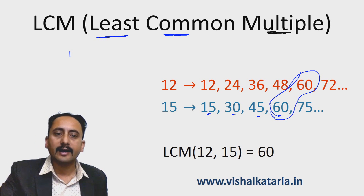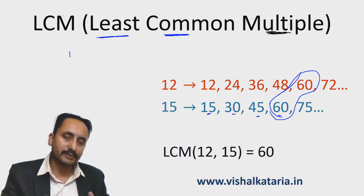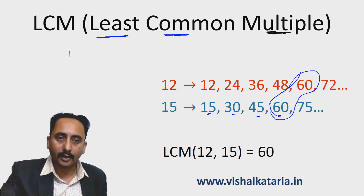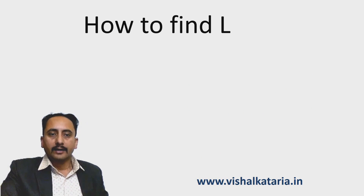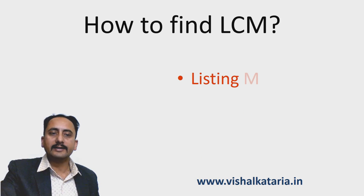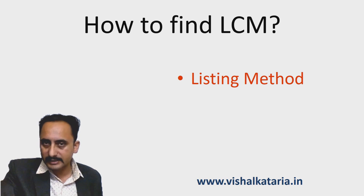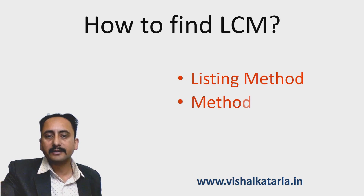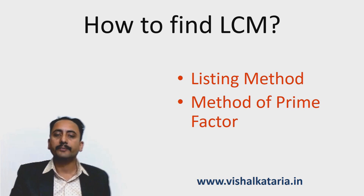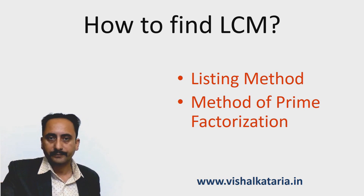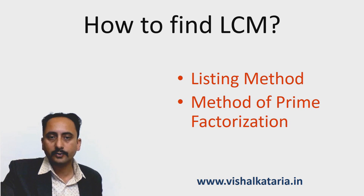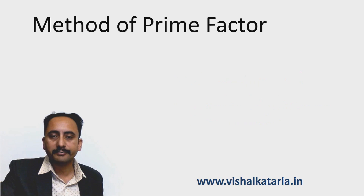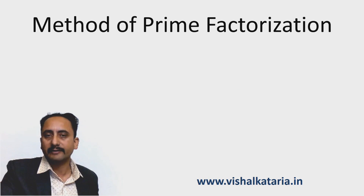This method of finding LCM — that is, Least Common Multiple — is known as the listing method. This is the first method. Now, what other methods do we have to find LCM? The first is the listing method, which I just discussed, and the second method is the method of prime factorization.